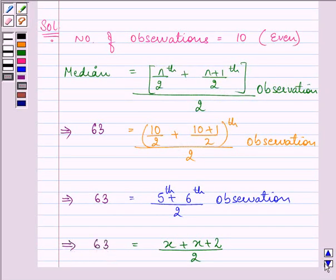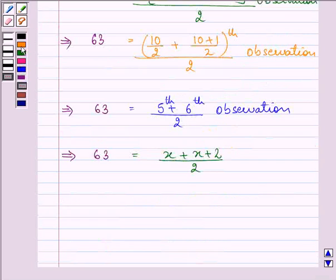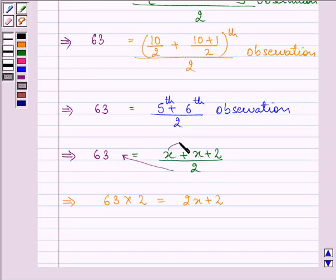This is a linear equation in one variable, so we can easily find the required answer. 63 gets multiplied by 2 when we multiply both sides by 2. x plus x becomes 2x plus 2.